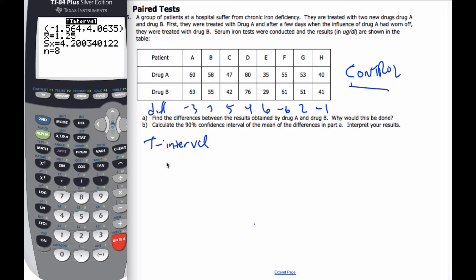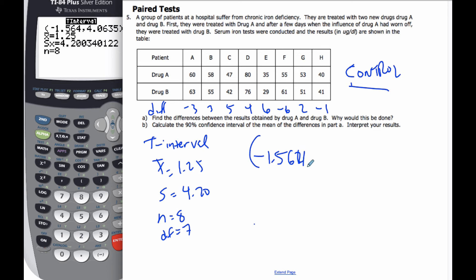And I get my values when I do so. X bar is 1.25, S is 4.20, N is equal to 8, so the degrees of freedom is equal to 7. And so my confidence interval is negative 1.564, comma, 4.0635.